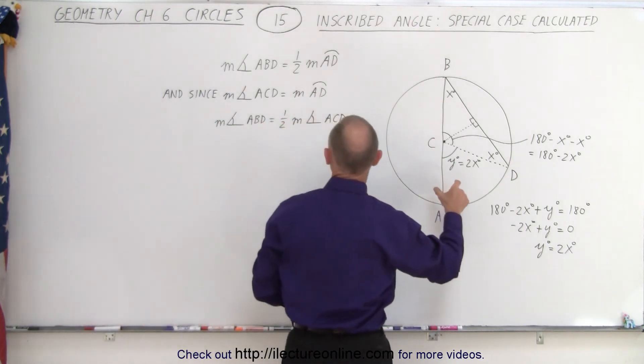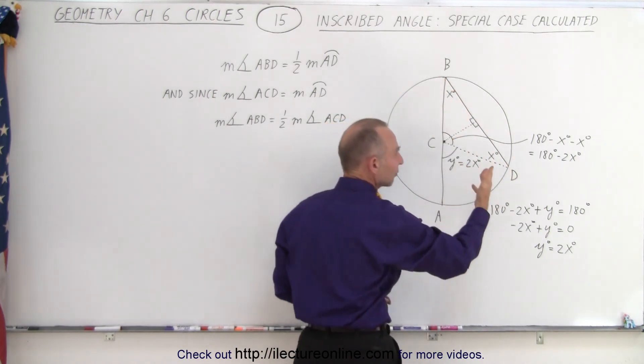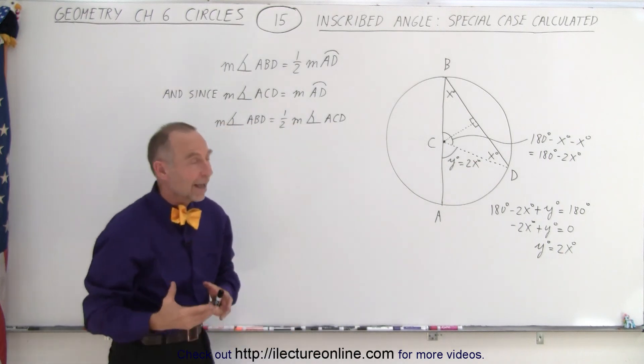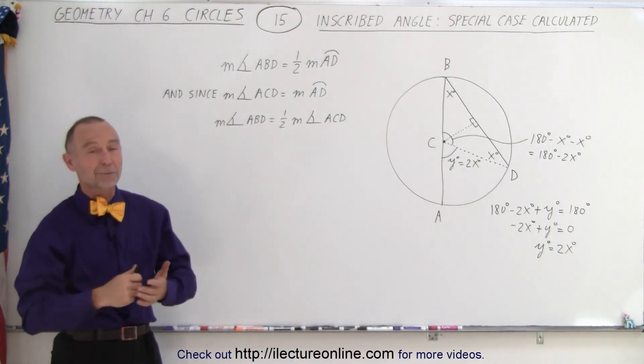So here notice that ABD is x, ACD is 2x and therefore we've shown that it's exactly half and this theorem is indeed correct and that is how it's done.